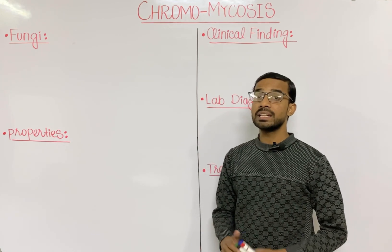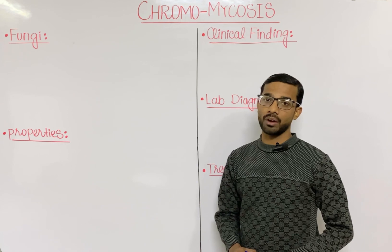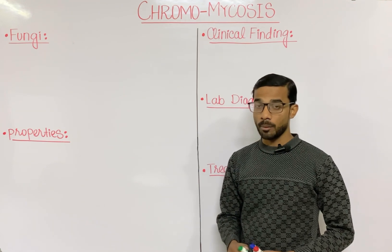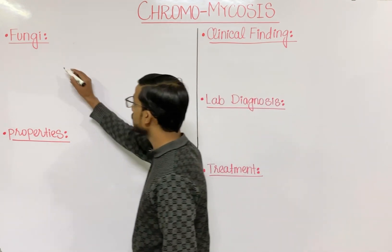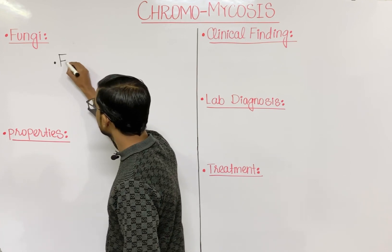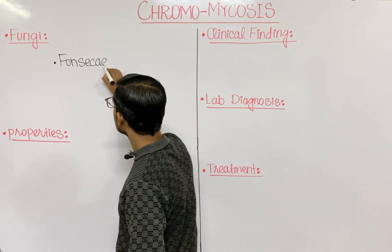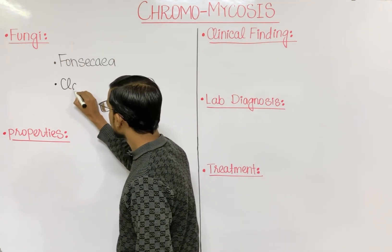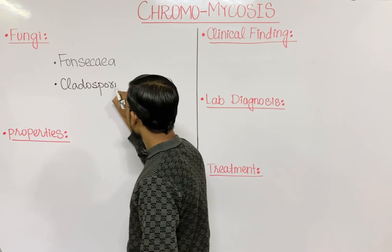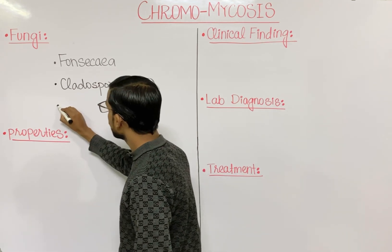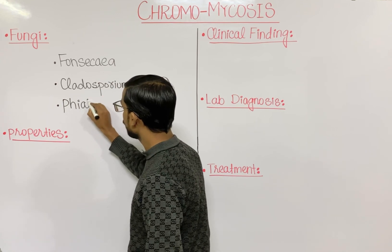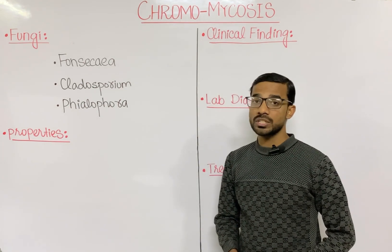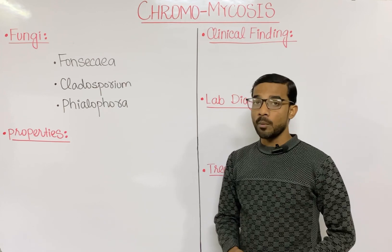First of all, we will see the different fungi involved in chromomycosis. Basically three genera of fungi are involved. The first one is Fonsecaea, the second is Cladosporium, and the last is Phialophora. These are the three most important genera of fungi that cause chromomycosis.